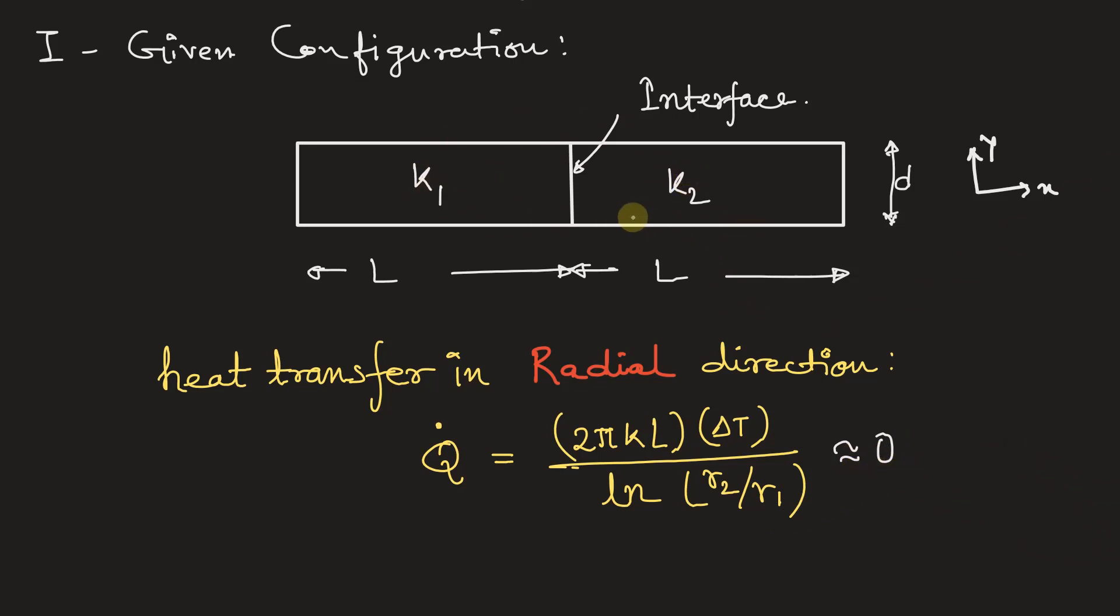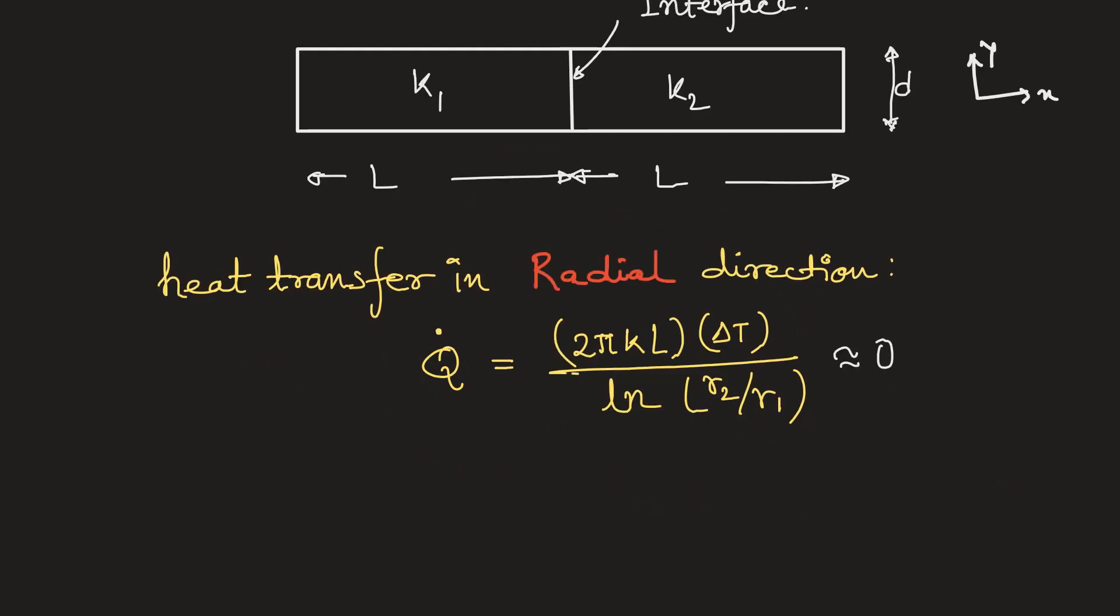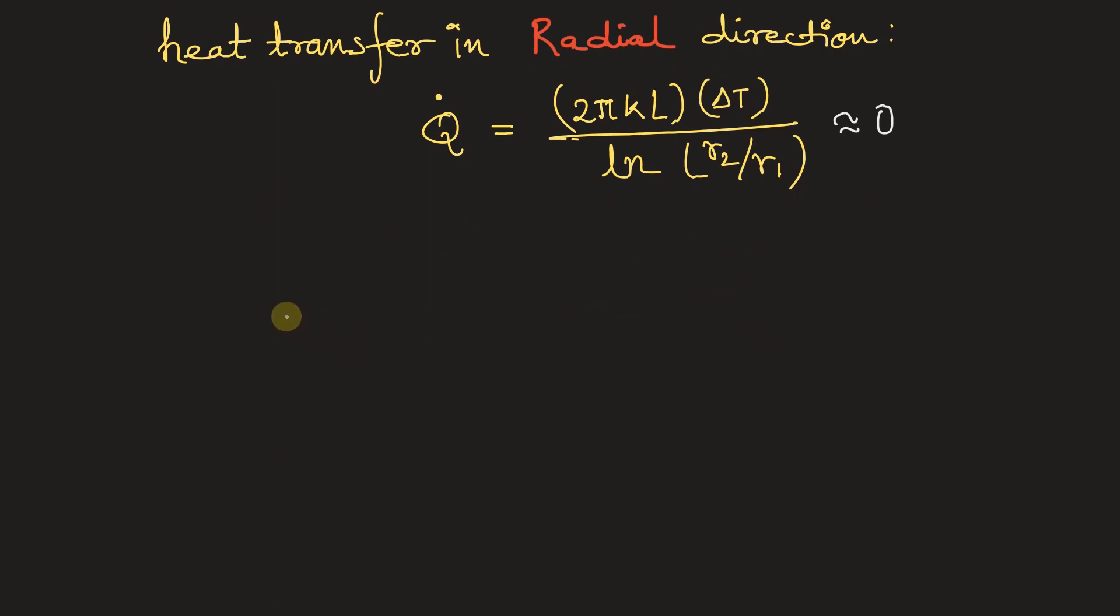Now let's express this bar in equivalent thermal circuit. T1 is the initial temperature. We have the thermal resistance, this is the interface, and this is the end temperature T2. The thermal conductivity of this side of the material is K1, so the resistance R1 is equal to L upon K1*A, the cross-sectional area. And R2 will be equal to L upon K2*A because thermal conductivity is K2. We'll also write Q dot, the heat flow rate.